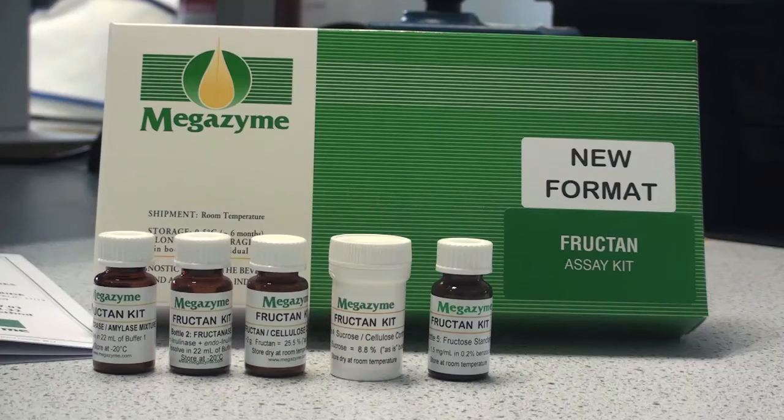The fructan kit as received should contain an instructions booklet, a bottle of sucrase plus beta-amylase pullulanase and maltase, a bottle of fructanase, fructan control flour, sucrose control flour, and a D-fructose standard solution.